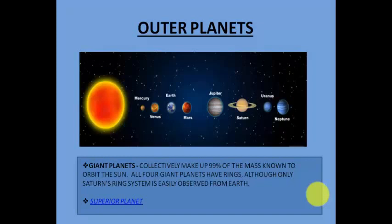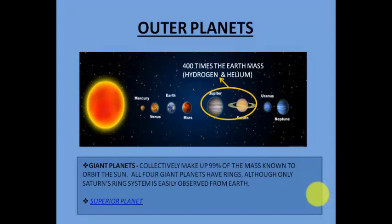These four outer planets are called superior planets because they are much larger than Mercury, Venus, Earth, and Mars. Jupiter and Saturn together contain a lot of hydrogen and helium and are 400 times the combined mass of Earth. Uranus and Neptune are less massive, smaller, and contain a lot of ice.